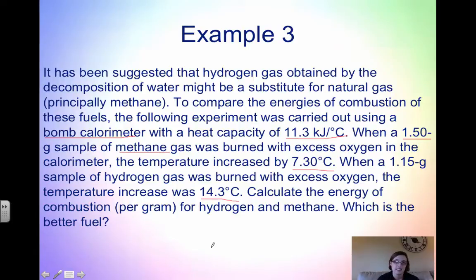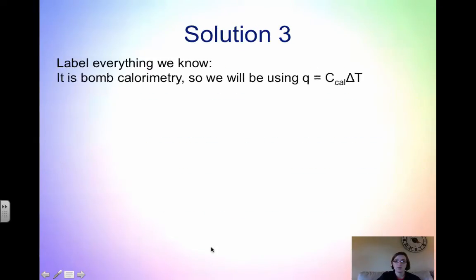Label everything you know. So if that means you make a column down the side of your paper and label everything, do that. First, it's bomb calorimetry because the problem said so. We have to use the equation Q equals capital C calorimeter, the calorimeter constant, times delta T.